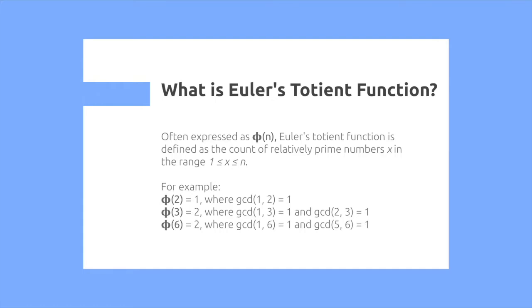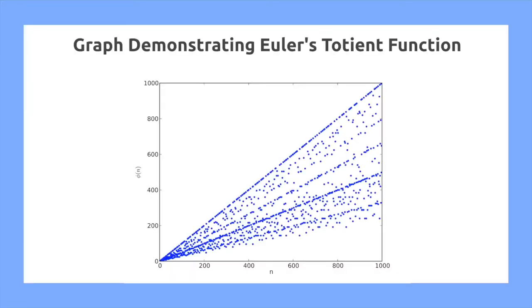And similarly, phi of 6 is equal to 2. We see this graph demonstrating Euler's totient function. On the x-axis we have the different numbers n, and on the y-axis we have the value of phi of n. We can see this takes an interesting shape and it's not at all continuous.